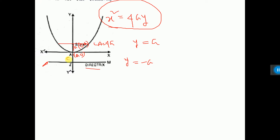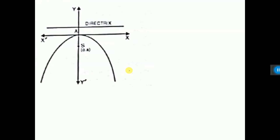The distance between the origin and this point is a. Since it is in the negative direction, it comes to minus a. Now, the next parabola is in just the opposite direction. Its equation is x squared equals minus 4ay. You have to memorize this equation.